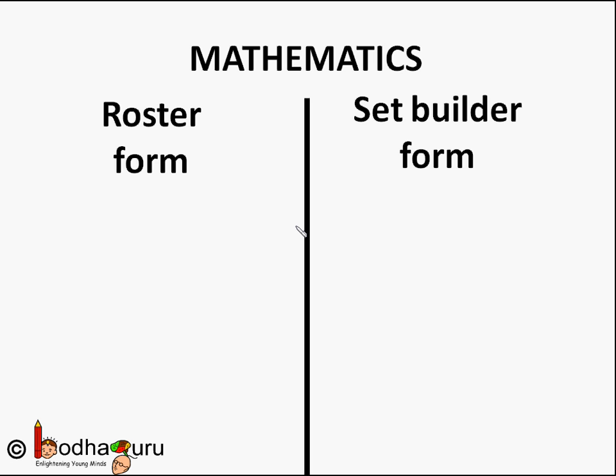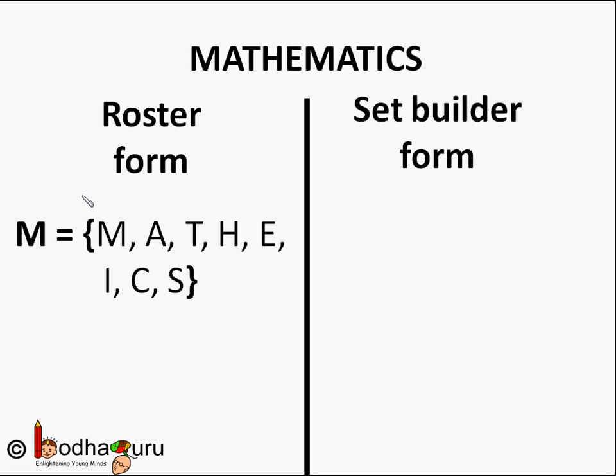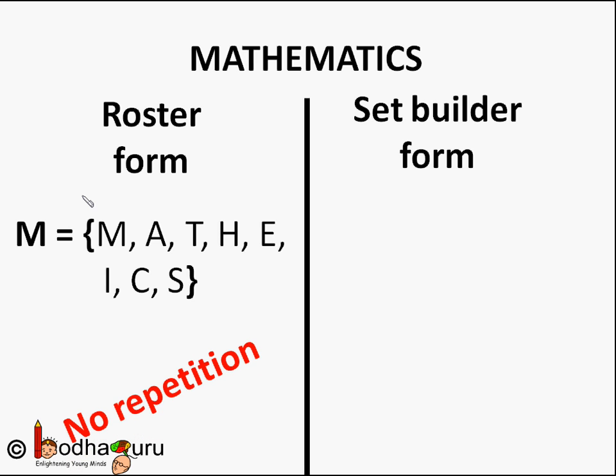This set has infinite number of elements. To summarize, a set is a collection of things that have something in common or follows a rule. We can write a set both in roster form or set builder form. Like say we want to make a set forming the word 'mathematics' — this set would have unique alphabets M, A, T, H, E, I, C, S. Alphabets A, T and M are repeated but written only once. A set contains distinct elements; no element is repeated.